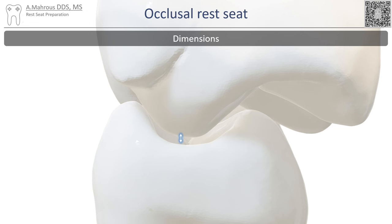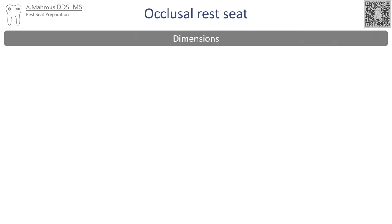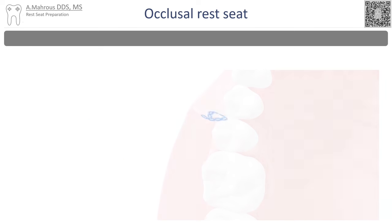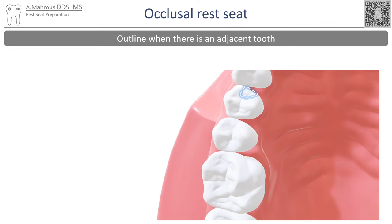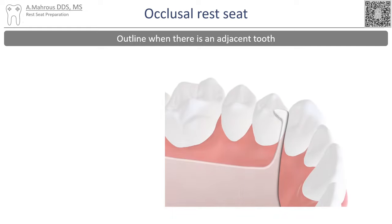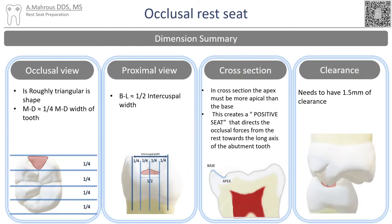If pressure is applied, the explorer should move towards the apex. The marginal ridge should be reduced 1 to 1.5 millimeters; this measurement can also be done using a perio probe if there is no opposing teeth. When an occlusal rest is needed in an area where there is an adjacent tooth, the rest is shifted slightly to the lingual to facilitate access through the lingual embrasure.